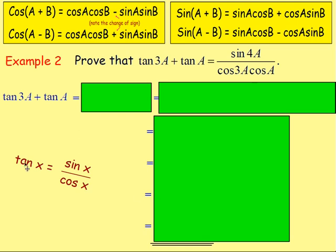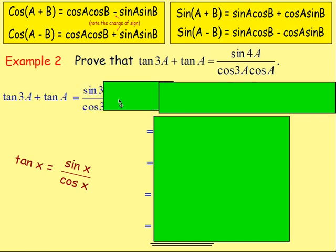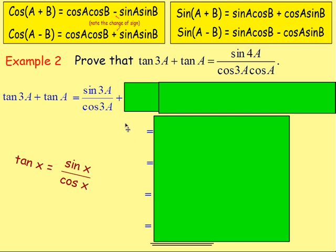If you think back to your National 5, tan(x) is equal to sin(x) / cos(x). Which means then that tan(3a) is going to be equal to sin(3a) / cos(3a), and then we're wanting to add on tan(a), which is equal to sin(a) / cos(a).